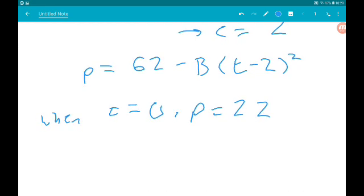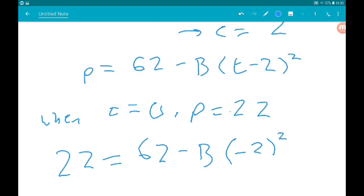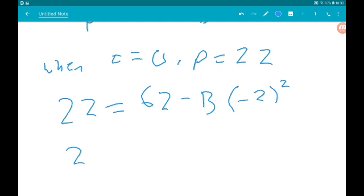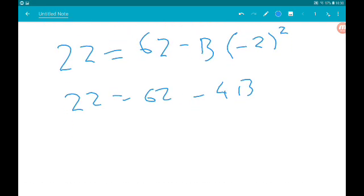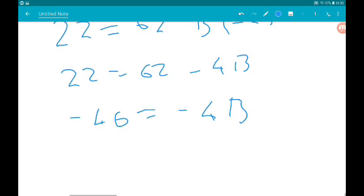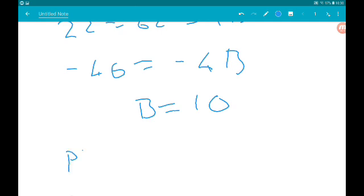Substitute those numbers in, we get 22 is equal to 62 minus B times minus 2 squared. So that gives us 22 is equal to 62 minus 4B. Take 62, we get minus 40 is equal to minus 4B. Therefore, B is 10. So our model is P is 62 minus 10 lots of t minus 2 squared. Cool.